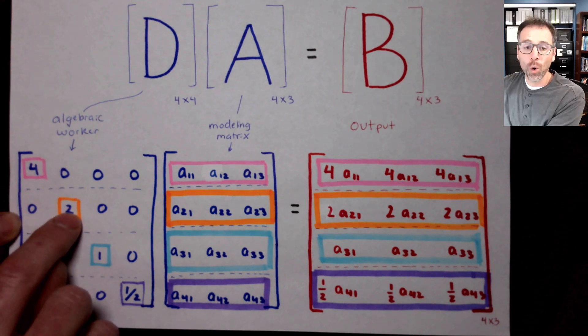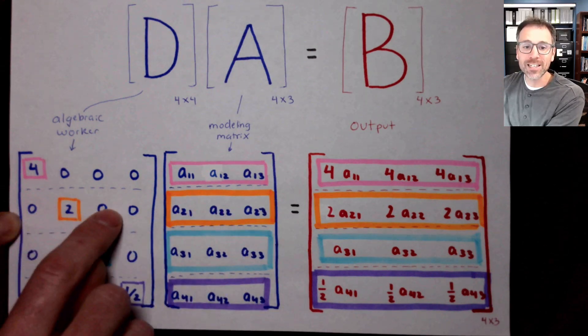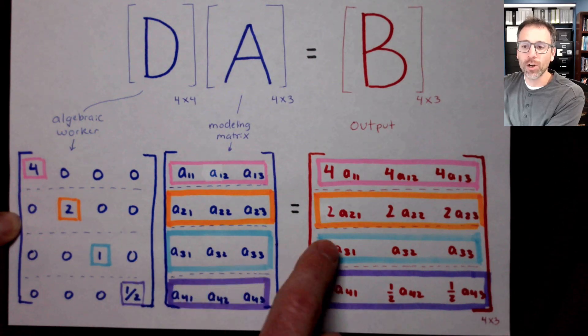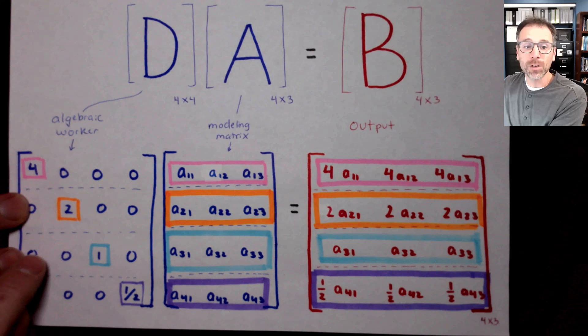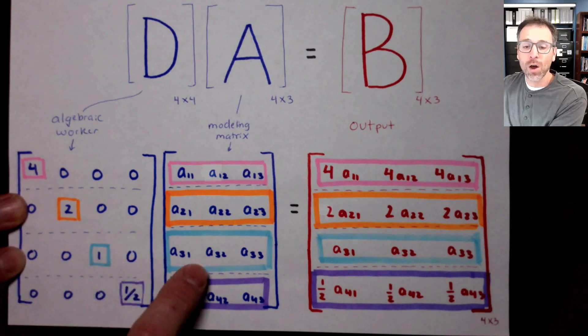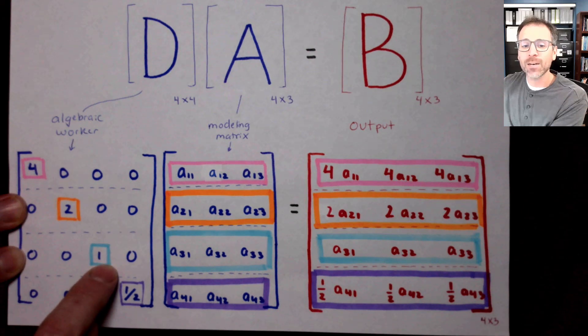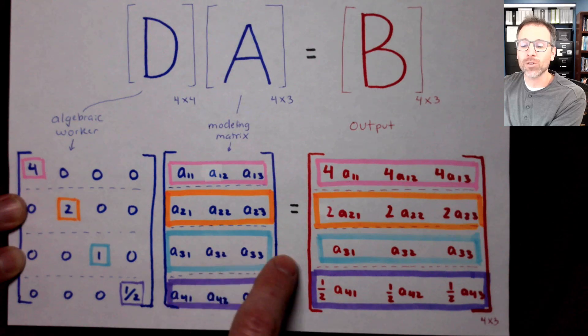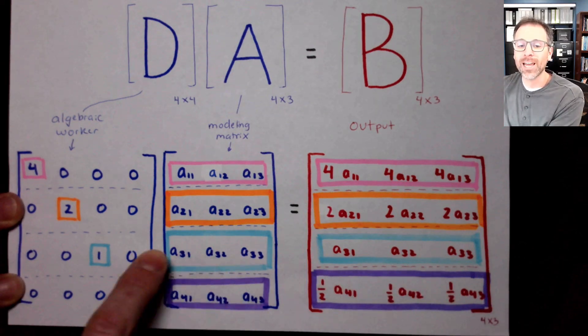And when I produce the output, the first row of the output is four times the first row of the input. Similarly, this orange two gets matched with this orange row two. These zeros annihilate access to all of those. And the second row of my output is just two times the second row of my input. Similarly, all these zeros annihilate access to rows one, two, and four. The highlighted blue one in entry three, three correlates with row three of my modeling matrix.